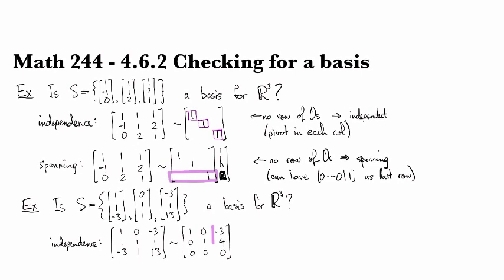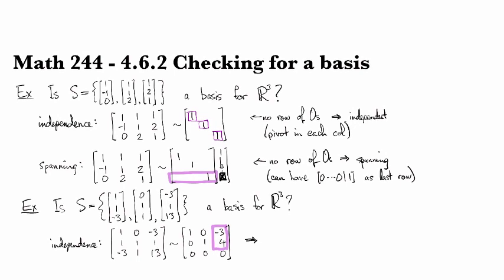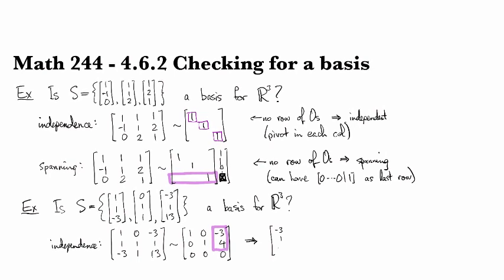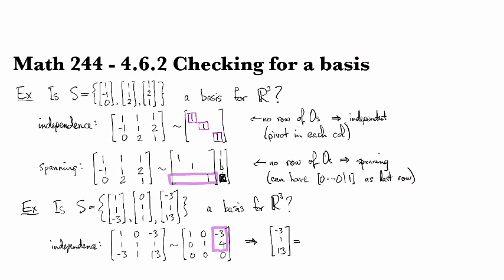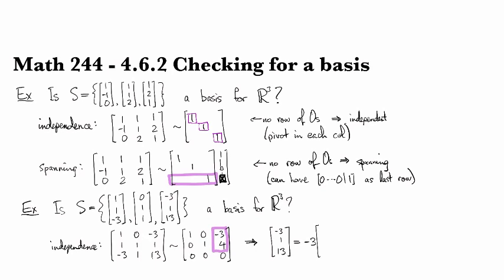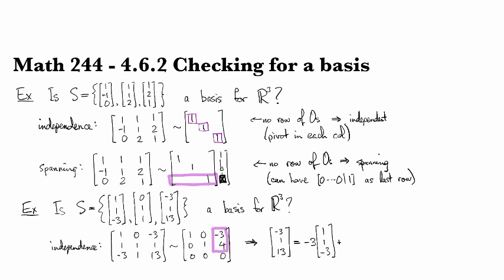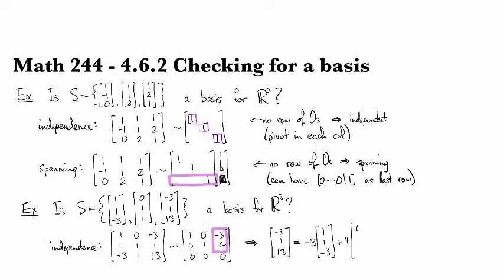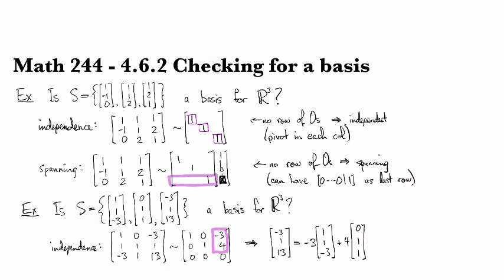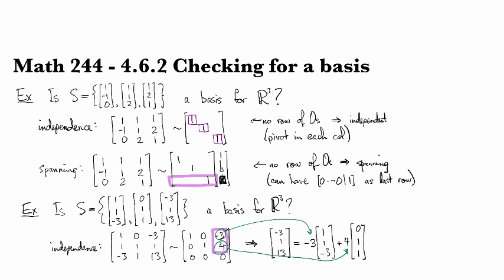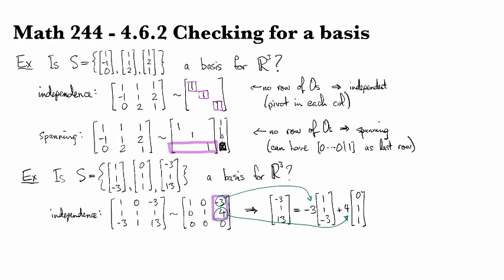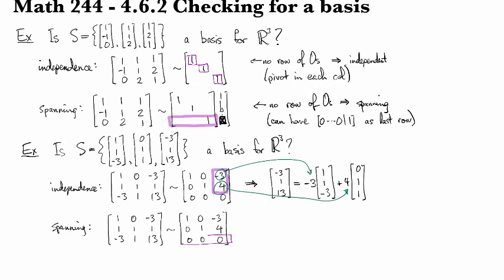And we saw that this shows what dependence relation we have, namely that our third vector is -3 times the first vector plus 4 times the second vector. So we can just read those entries off as the coefficients necessary for a dependence relation. At the same time, if we were to check for spanning, then we would have seen that we end up with this row of zeros down here in the bottom.